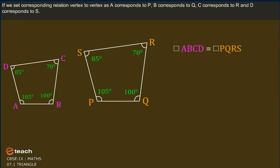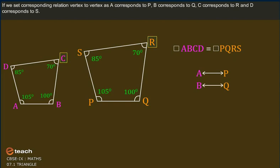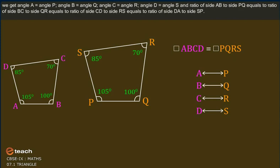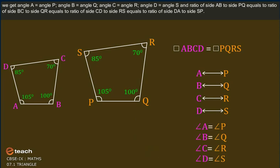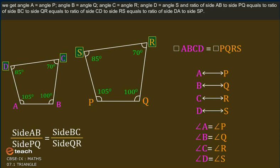If we set the corresponding relation vertex to vertex as: A corresponds to P, B corresponds to Q, C corresponds to R, and D corresponds to S — we get angle A equals angle P, angle B equals angle Q, angle C equals angle R, and angle D equals angle S. And the ratio of side AB to side PQ equals side BC to side QR, equals side CD to side RS, equals side DA to side SP.